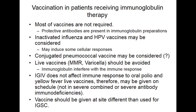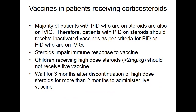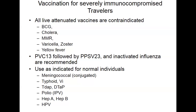Vaccines should be given at a site different from where subcutaneous immunoglobulin is administered. For patients receiving corticosteroids, inactivated vaccines can be given. For live vaccines, in children receiving more than 2 mg/kg body weight of corticosteroids for more than two months, live vaccines should be avoided. Wait at least two months after stopping corticosteroids before giving live vaccines.